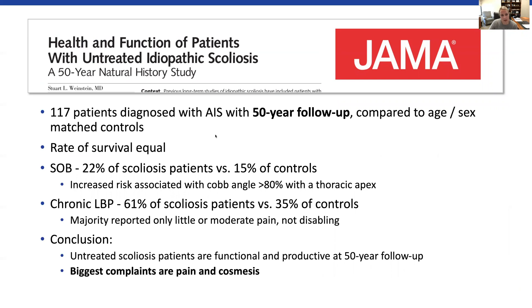Stuart Weinstein, who is in Iowa, did a really nice study looking at untreated scoliosis in a cohort of adolescent patients. The study was so well-designed and the results were so helpful that it was actually published in JAMA, which for an orthopedic study is a pretty big deal. He looked at 117 patients diagnosed with adolescent idiopathic scoliosis who had 50-year follow-up. These patients were all compared to age and sex-matched controls. He noted that the rate of survival for patients with untreated scoliosis was equal to that of those who didn't have it.